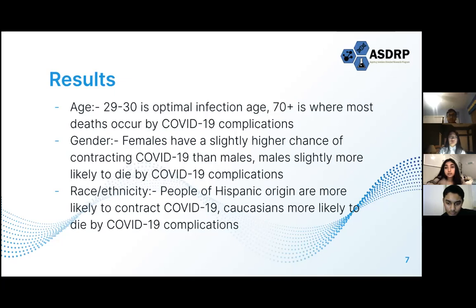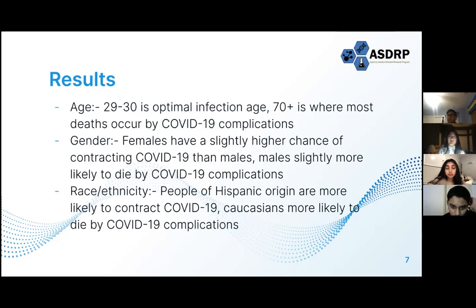In gender's case, the results were more ambiguous. Females had a slightly higher chance of contraction than males, while males had a slightly higher chance of dying from COVID-19 complications. For race and ethnicity, it was even more ambiguous — people of Hispanic origin had the highest chance of contracting COVID-19, though people who were white had higher chances of dying from COVID-19 complications.